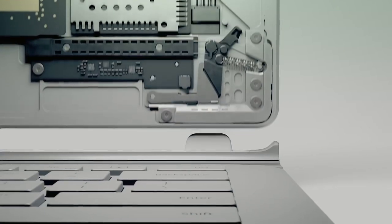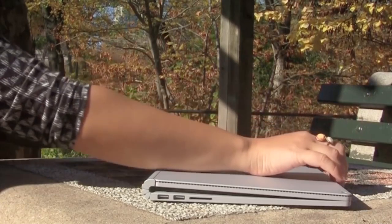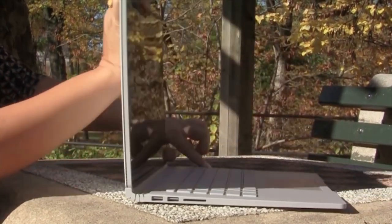As you open the Surface Book, the hinge rolls outward, pushing the display slightly farther back from the keyboard dock. This increases the surface area of the base, making it more stable and harder to tip over.